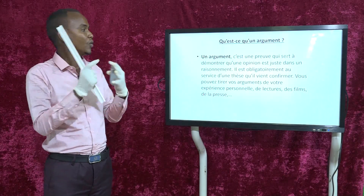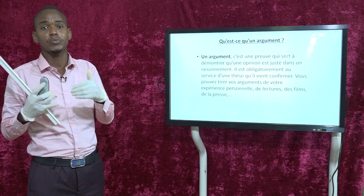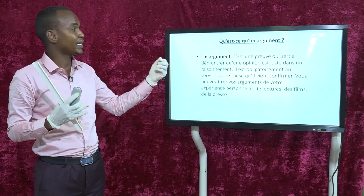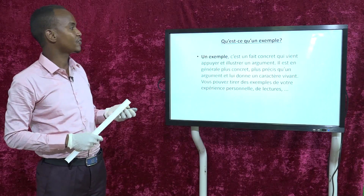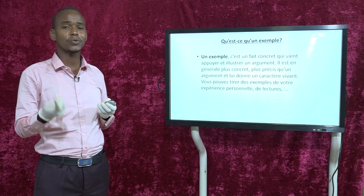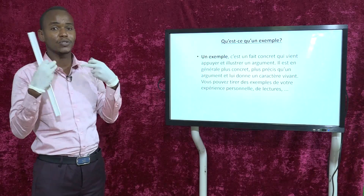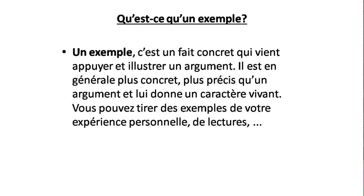Pour résumer : le thème est le sujet dont on parle, écrit ou oral. La thèse est l'avis que l'auteur a vis-à-vis du thème. Les arguments sont les raisons qui justifient l'opinion de l'auteur. Enfin, un exemple c'est un fait concret qui vient appuyer et illustrer un argument — plus concret et précis qu'un argument, il donne un caractère vivant. On encourage les élèves à lire beaucoup pour avoir plus d'exemples.